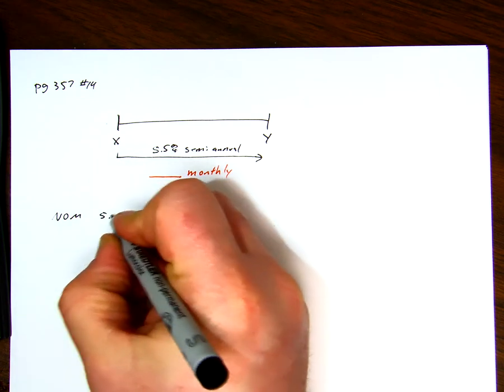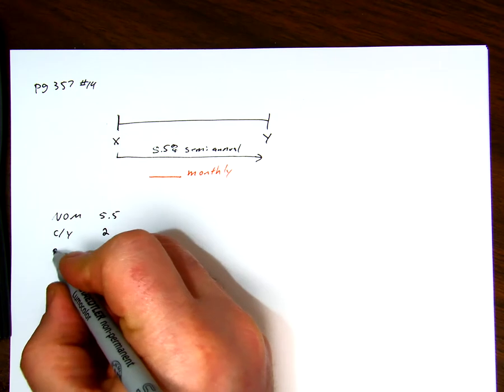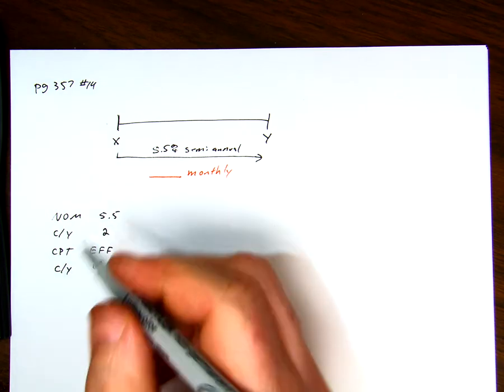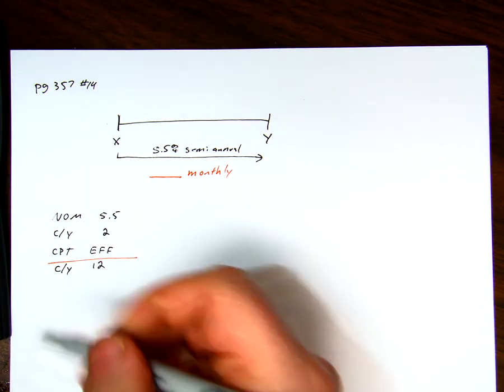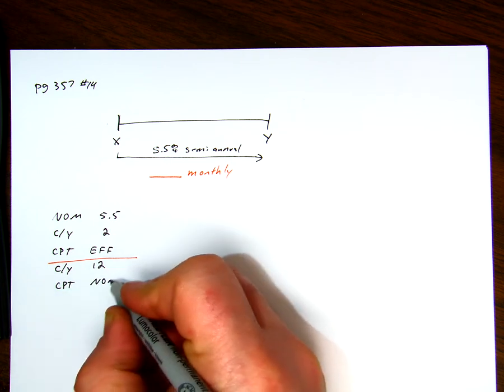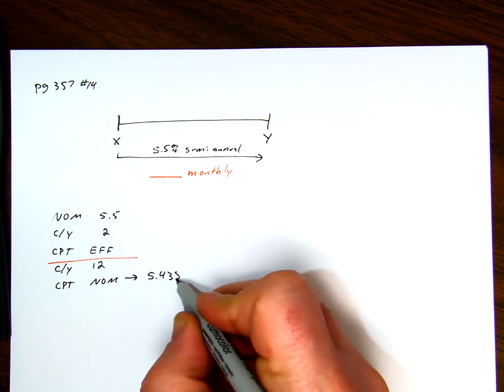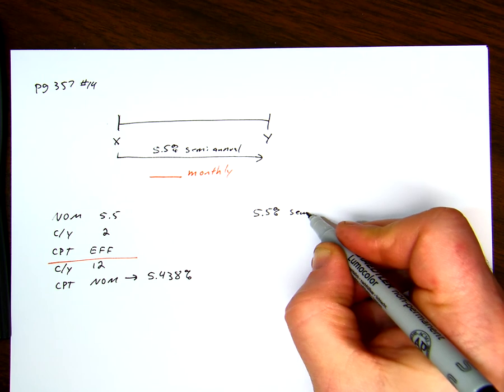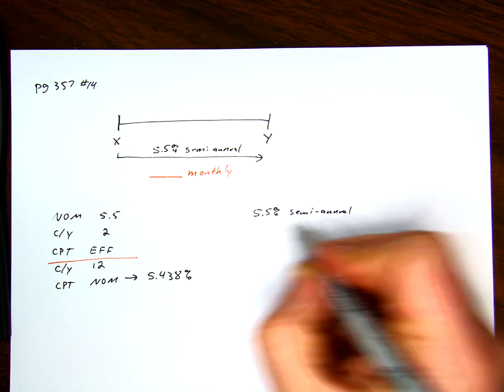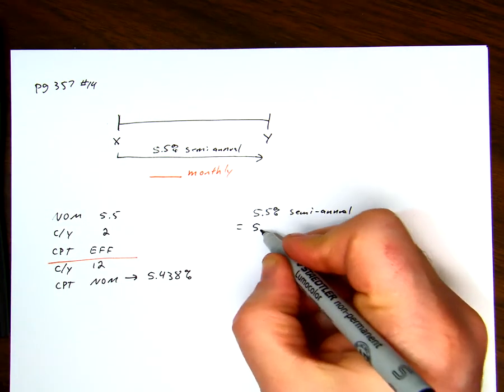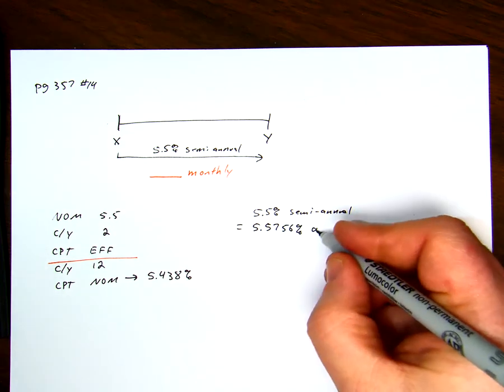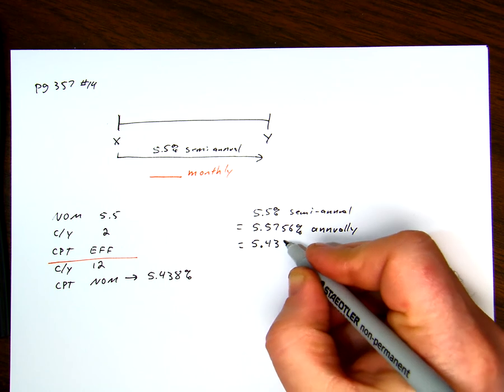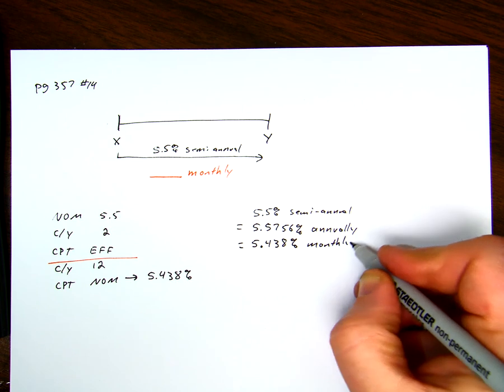So, nominal of 5.5, compoundings per year of 2. We're going to compute the effective rate. Then we're going to change the compoundings per year to be 12. This is where we're starting the red stuff. And we're going to compute the nominal rate, and the result coming out is 5.438%. So, three equivalent rates, we could say 5.5% semi-annual. This is equal to 5.5756% annually. And it's equal to 5.438% monthly. Equivalent rates.